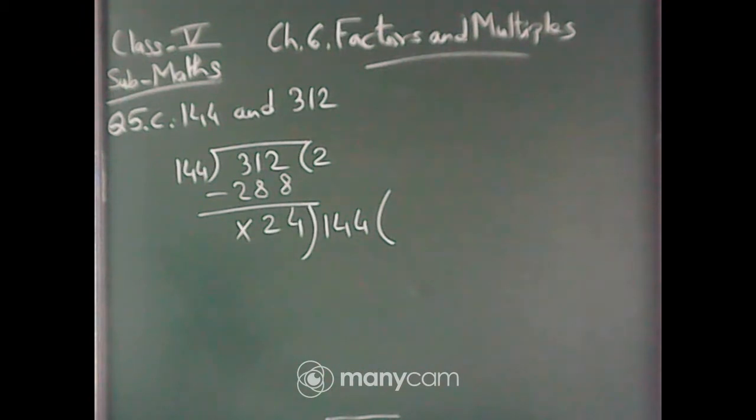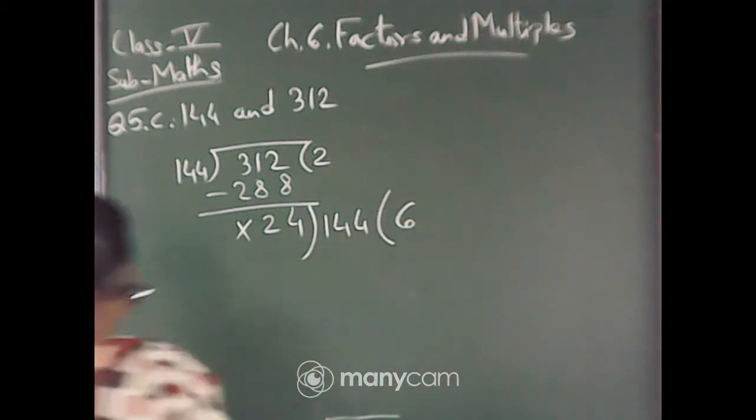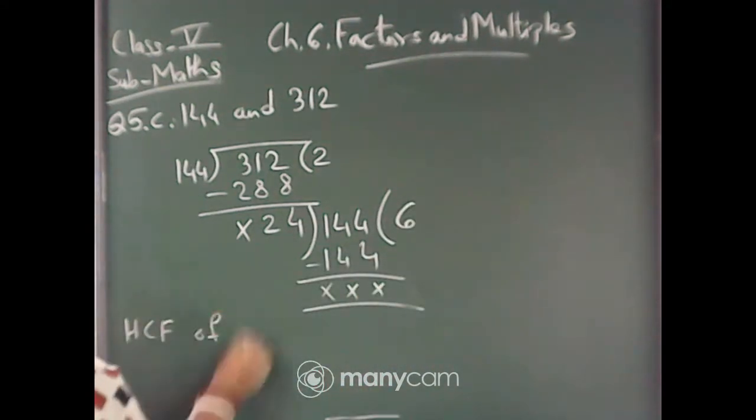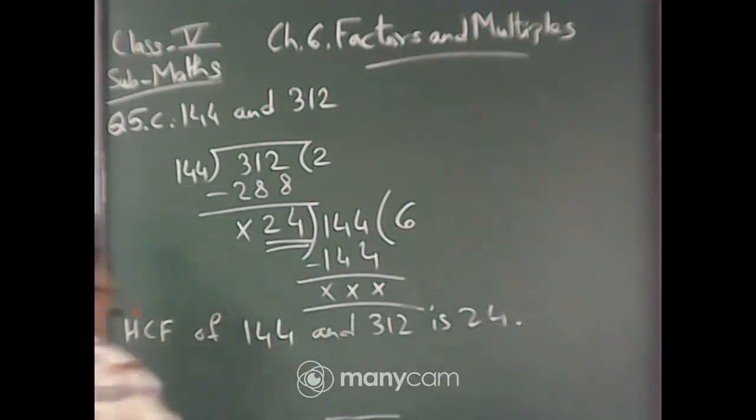Now this 144 will come down, it will be here. This will give you 24 into how much is 144. 6 times 24 is 144, carry 2, 6 times 2 is 12 and 13, 14. Subtraction will give you 0. So HCF of 144 and 312 is 24.